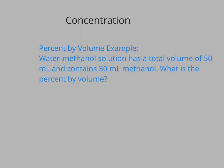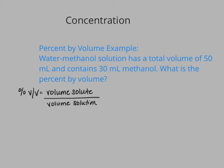Let's take a look at a percent by volume example. A water-methanol solution has a total volume of 50 milliliters and contains 30 milliliters of methanol. What is the percent by volume? Our percent by volume is our volume of solute divided by our volume of solution. This is actually a tricky example because they didn't tell us which was the solute and which was the solvent between water and methanol. So if we have 50 milliliters of solution and 30 milliliters of that is methanol, then the 20 milliliters of that must be water. We said that whenever we have a solution made up of components that are the same phase — in this case, liquid-liquid — the solvent is the one that we have more of.